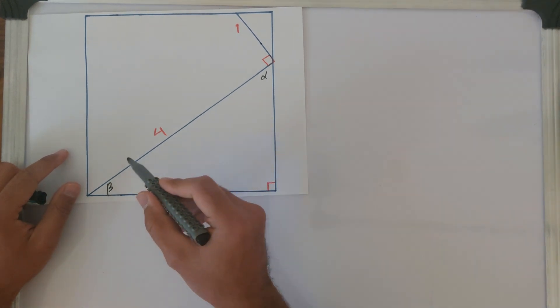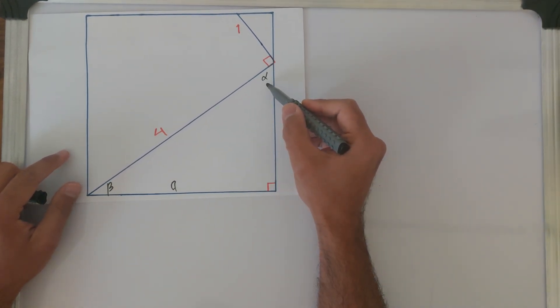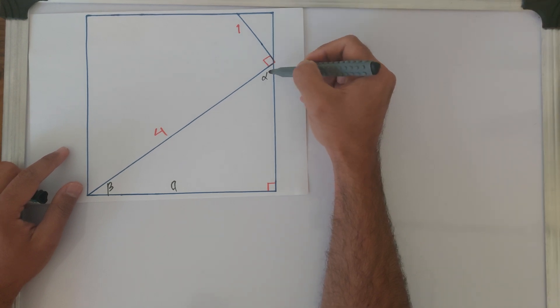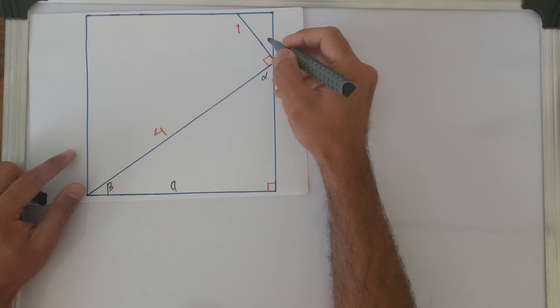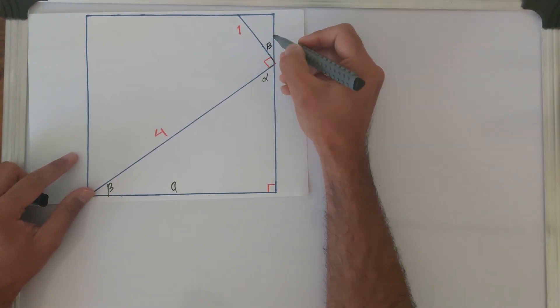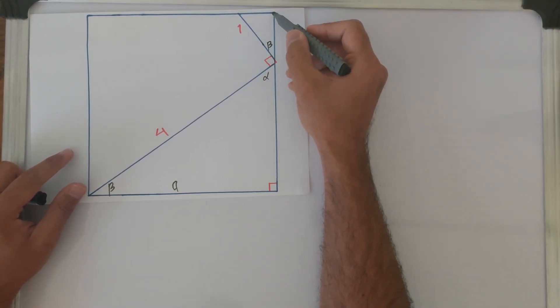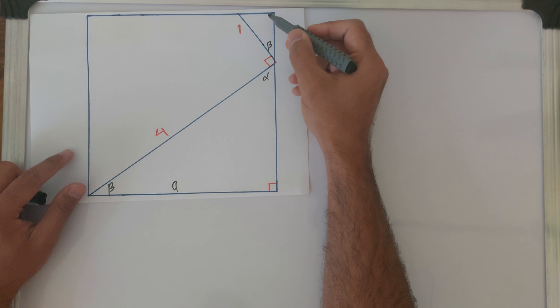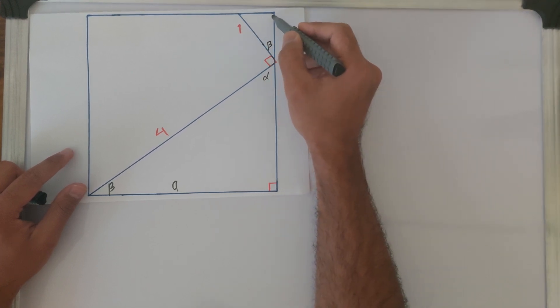beta. Beta is 90 degrees minus alpha because this is a right angle triangle. This whole angle is 180 degrees and we have 90 degrees here, so this is 90 degrees minus alpha which is beta. Let me write it down here. We have a right angle here because that's the side of the square, so we have 90 degrees,